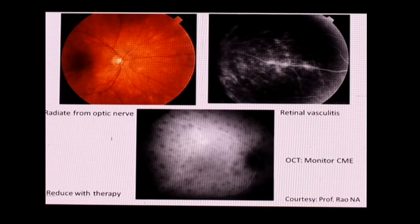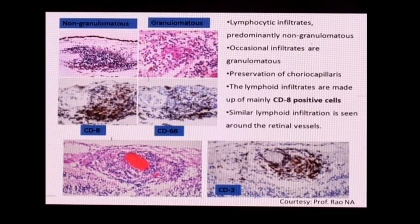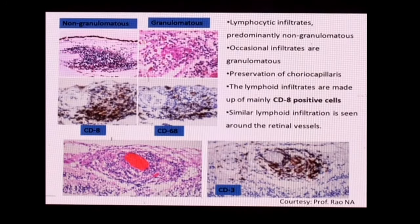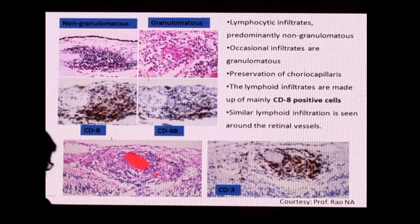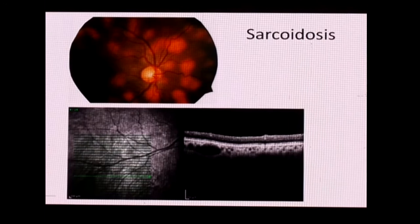OCT is an important tool in birdshot because cystoid macular edema (CME) is a major cause of visual loss and can be monitored. Histopathology from autopsied eyes shows both non-granulomatous and granulomatous inflammation in the choroidal area and around retinal vessels, which contributes to the retinal vasculitis.